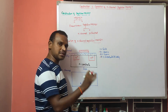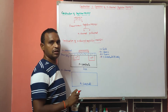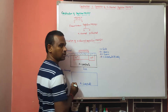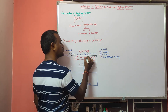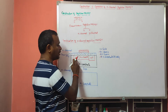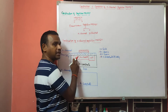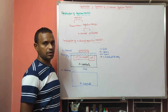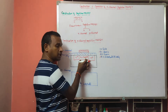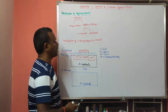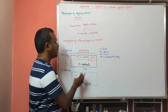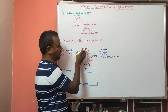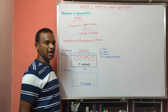In depletion MOSFET, a channel is compulsorily formed during construction. For N channel, that means we have to form an N type material channel between the source and drain. Between the N+ source and N+ drain, we place N type material as the channel. After forming the N channel, we form the SiO2 layer on top, then place the polysilicon material which acts as the gate terminal.